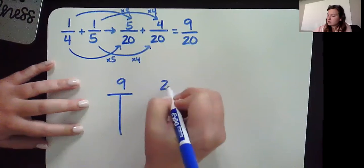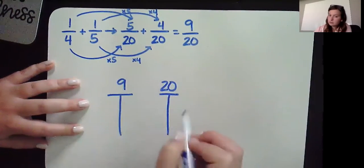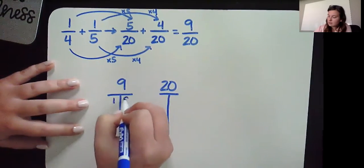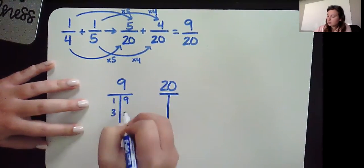Let's write out our factors so we can simplify. To make 9, we can do 1 times 9, and 3 times 3.